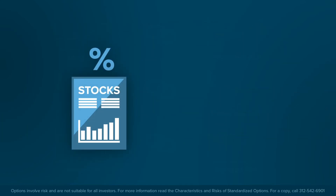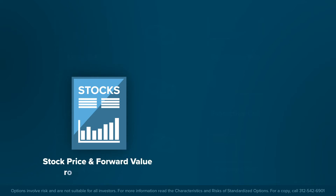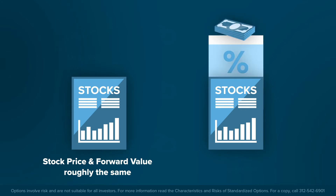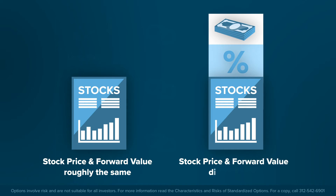In a low-rate environment, the forward value of a stock that pays no dividends is roughly equal to the current value. If interest rates are high, or a stock is hard to borrow, or the stock pays a dividend during the life of the option, the forward value may differ meaningfully from the current stock price.